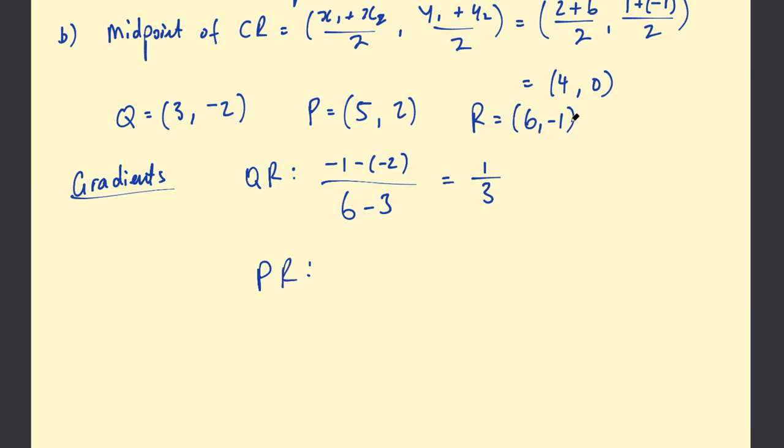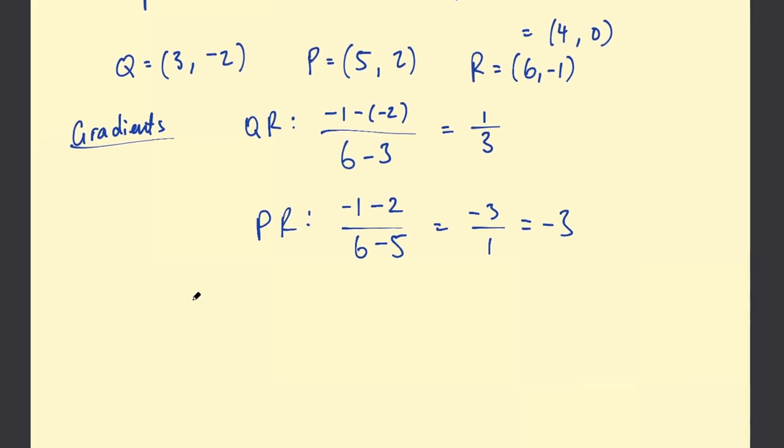Its gradient is going to be -1-2 over 6-5. That's -3 on 1 or just -3. Okay we have the gradients. Let's go ahead and find the equations of the lines.